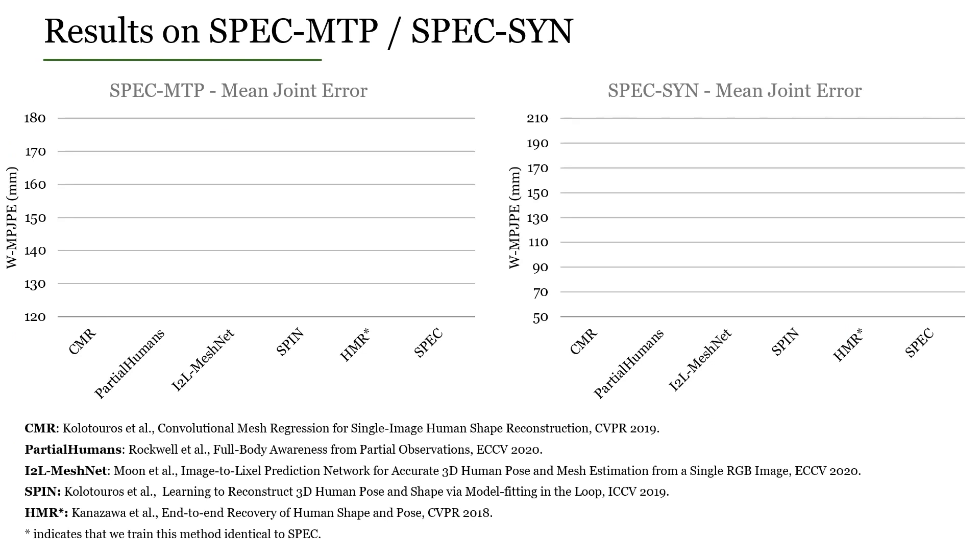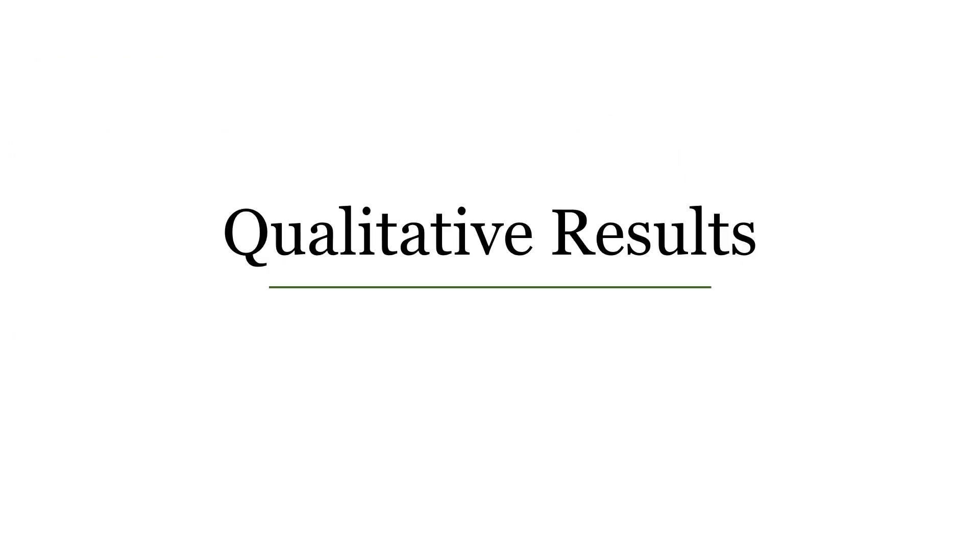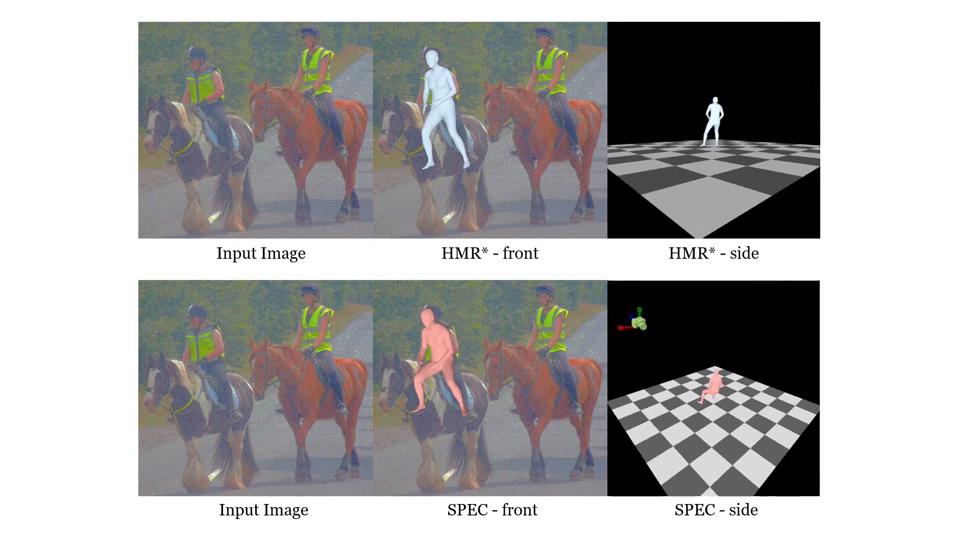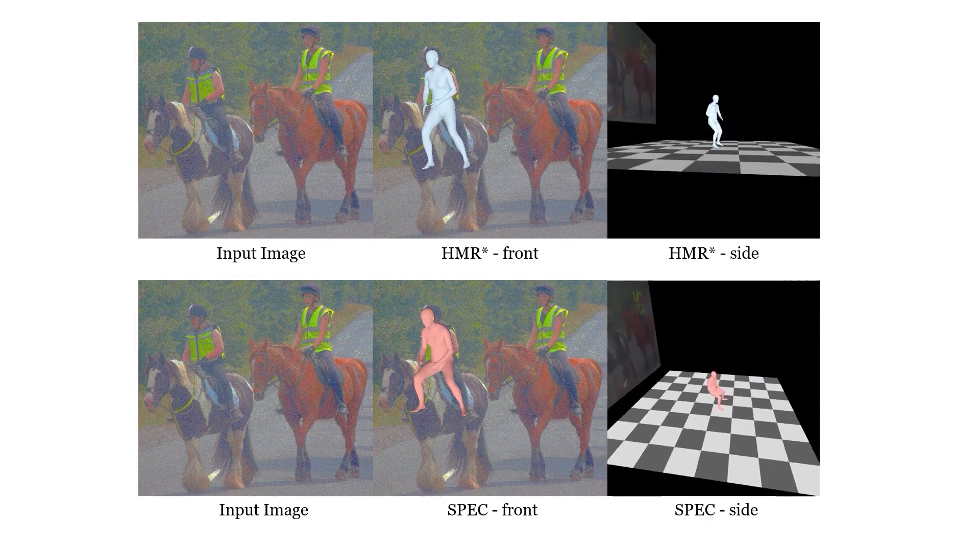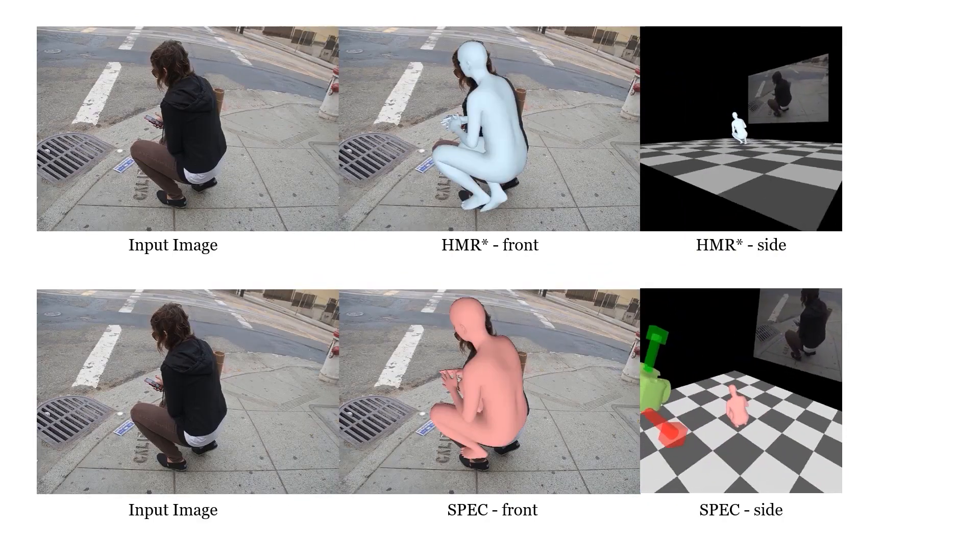Quantitative analysis shows that SPEC outperforms the previous state-of-the-art and a fair baseline method. Compared to previous approaches, SPEC predicts better 3D poses while capturing the global orientation of the body in the scene.